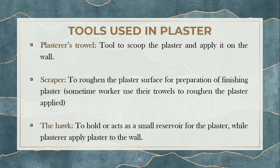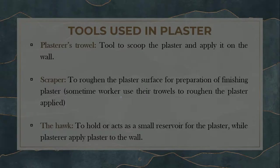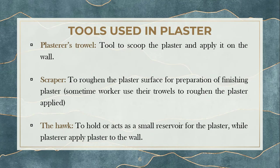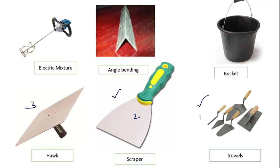The next tool is the scraper. The scraper is used to roughen the surface — making the wall ready for plastering. If any unwanted projections or ups and downs are there, with the scraper you scrape it even. You can also use a scraper after plastering to give finishing. This is the scraper — it has a sharp edge. Next is the hawk. The hawk is like a small reservoir which holds the plaster temporarily before you apply it onto the wall. You catch the handle vertically and place some plaster on it while using the trowel.